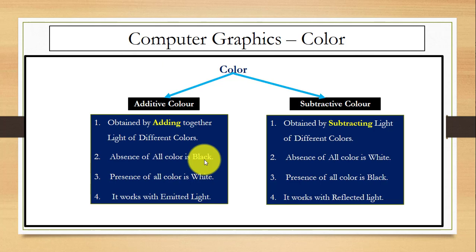First, we have color. We have two types: additive and subtractive. Additive color is obtained by adding together light of different colors. Here, absence of all color is black and the presence of all color is white. It works with emitted light.